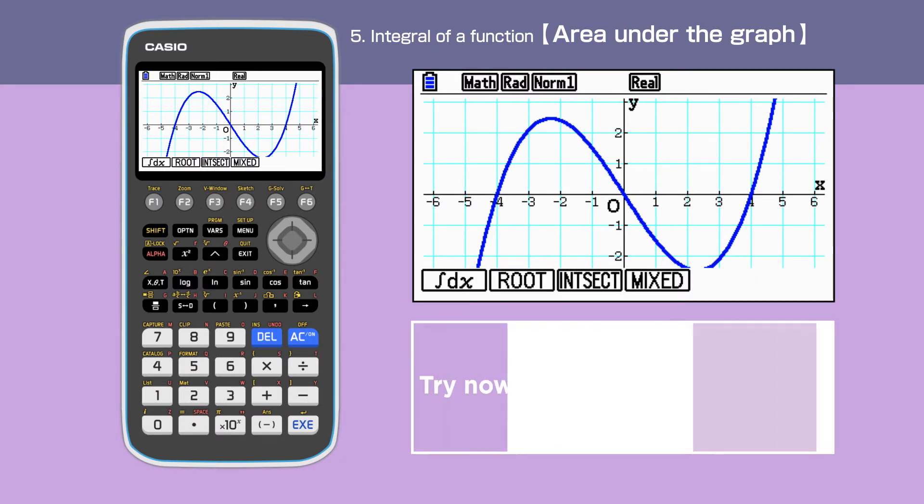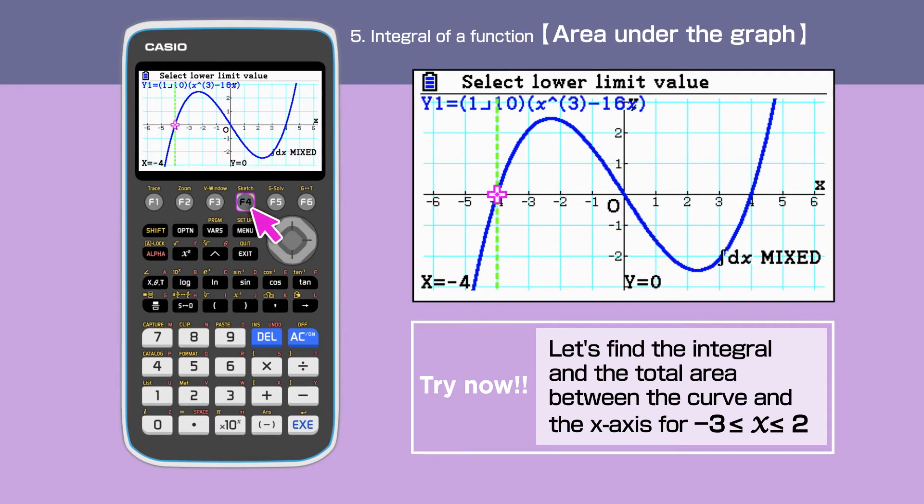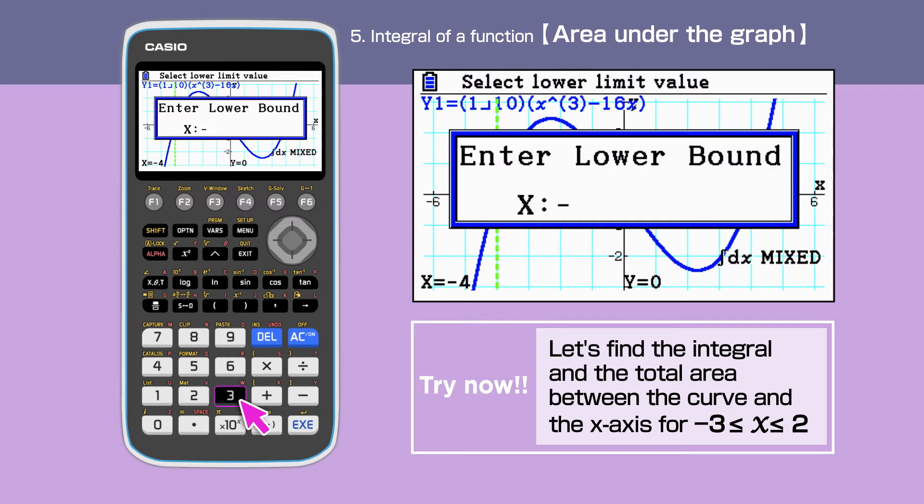First, we will find the integral as well as the total area between the curve and x-axis for the interval between x equals minus 3 and 2. Press F4 to select mixed. On the screen, we have a pink cursor and a green vertical line. Enter minus 3 for the lower bound for x. Make sure to use bracket minus to indicate a negative value.